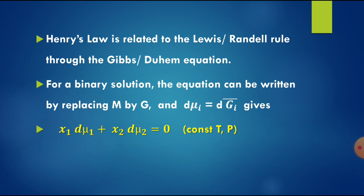Now consider Henry's Law. Henry's Law is related to the Lewis-Randall Rule through the Gibbs-Duhem equation. For a binary solution, from the Gibbs-Duhem equation we can write: x_1 d mu_1 plus x_2 d mu_2 equals 0 at constant temperature and pressure. This equation comes from the general form sigma x_i d mu_i equals 0.